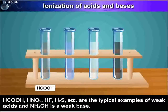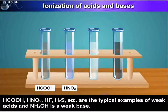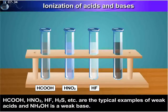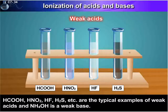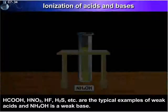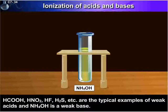HCOOH, that is formic acid; HNO2, that is nitrous acid; HF, that is hydrogen fluoride; and H2S, that is hydrogen sulfide, are typical examples of weak acids. And NH4OH is a weak base.